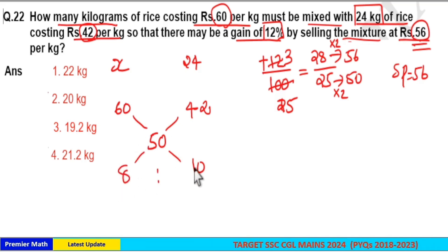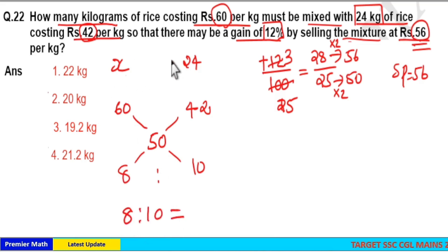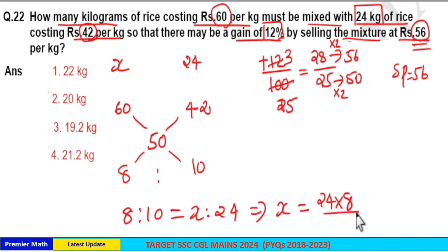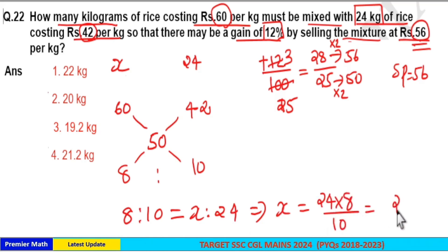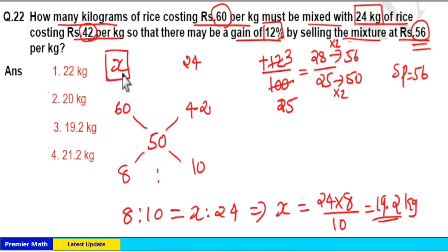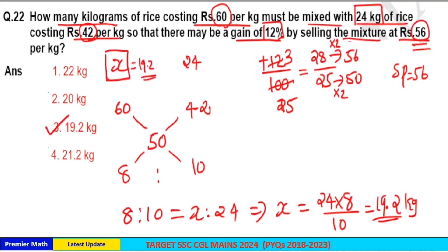So you should mix these two varieties in the ratio 8 to 10, which means 8 to 10 is in the same ratio as x is to 24. From this you can find the value of x: x = 24 × 8 divided by 10. That gives 8 × 4 = 32, and 8 × 20 = 160, so 192 divided by 10 = 19.2 kilograms. The amount of ₹60 per kilogram rice needed is 19.2 kilograms. Option 3 is your answer.